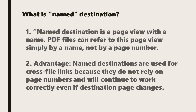A named destination is a page view with a name. PDF files can refer to this page view simply by a name and not by a page number. An advantage is that named destinations are used for cross-file links because they do not rely on page numbers and will continue to work correctly even if the destination page changes.